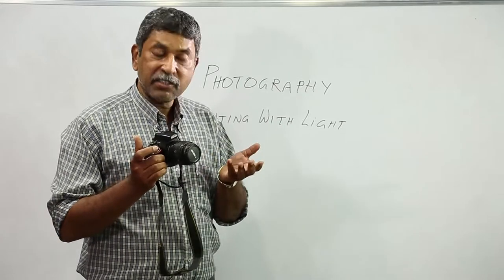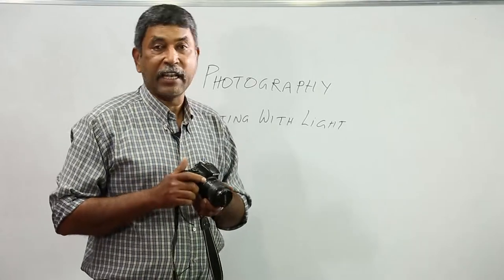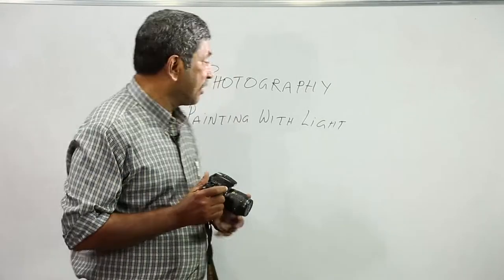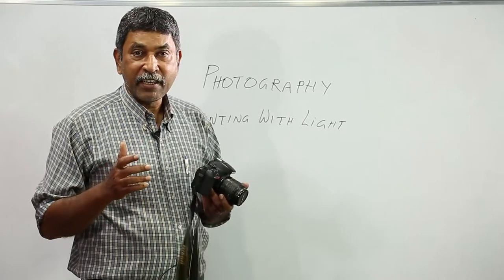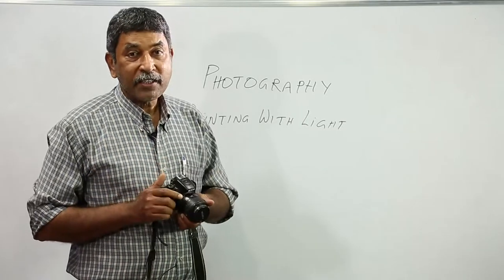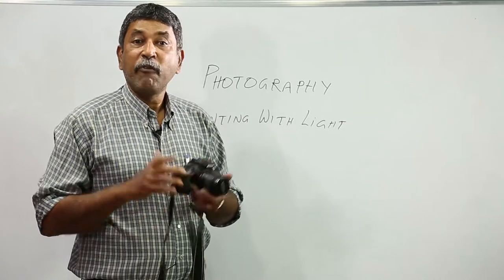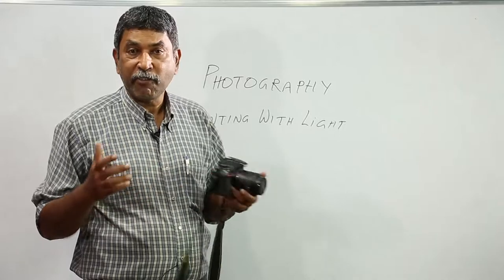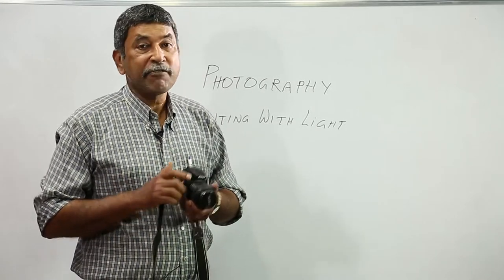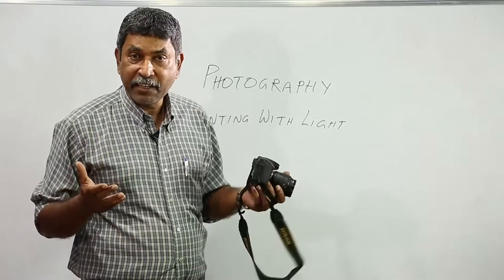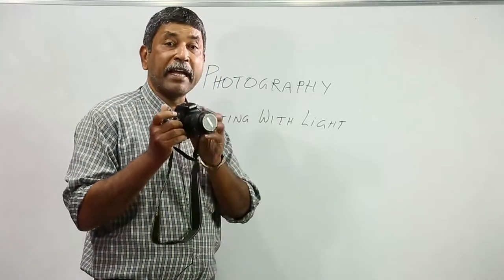On the lens you have the aperture which controls the light. As we said in the beginning, you are painting with light, so light is the raw material and you have to control it using the aperture. If there is a lot of light the aperture has to be reduced; if there is less light we have to open the aperture so that more light comes into the camera sensor.